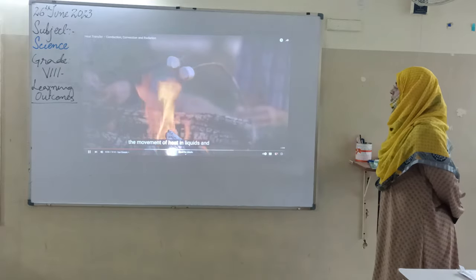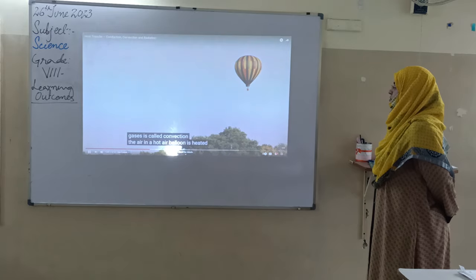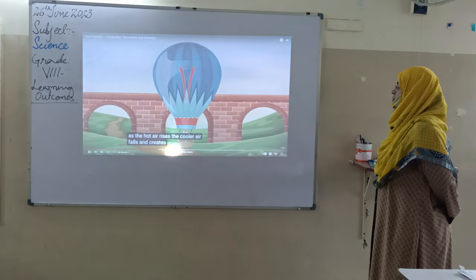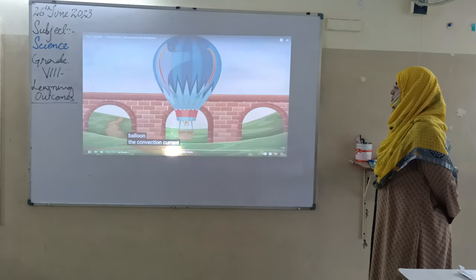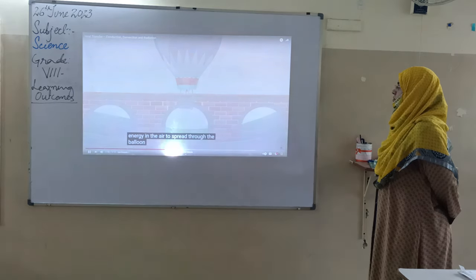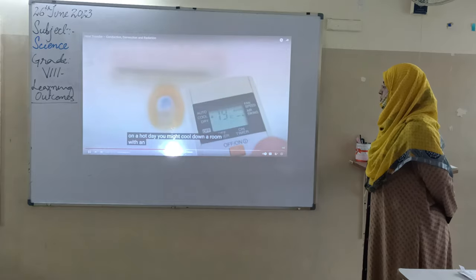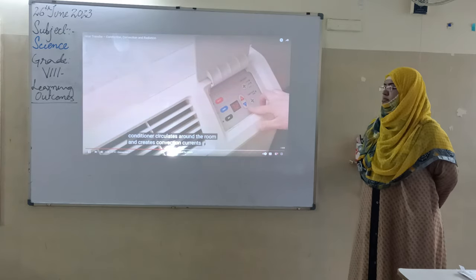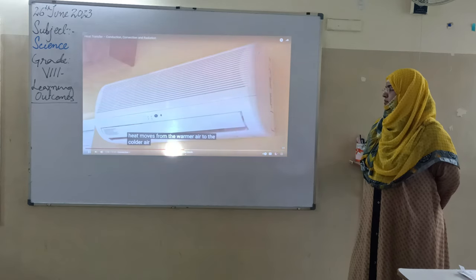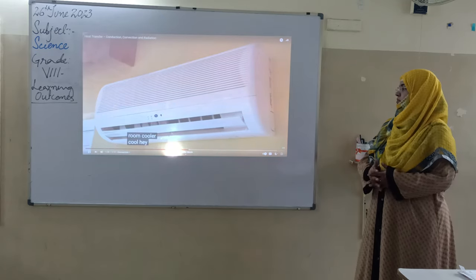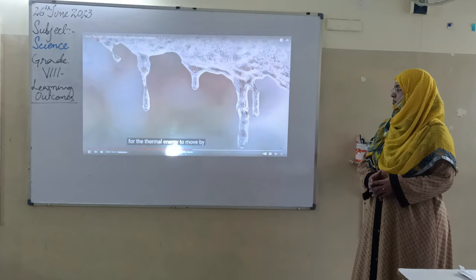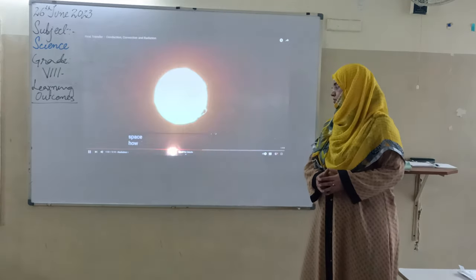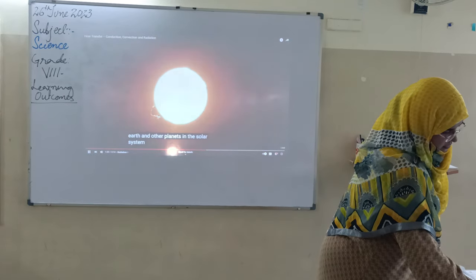The movement of heat in liquids and gases is called convection. The air in a hot air balloon is heated by the burner and rises up inside the balloon. As the hot air rises, the cooler air flows and creates a current within the balloon. On a hot day, an air conditioner circulates cold air around the room and creates convection currents. Heat moves from the warmer air to the cold air, making the room cooler. Between the sun and the earth is empty space — how does heat reach the earth?